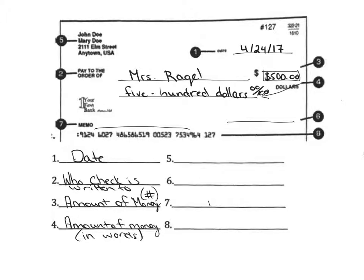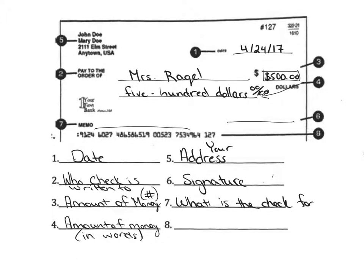Remember to put 00/100 to show there is no change. Number five is your address at the top. Number six is your signature line, where you sign that you approve this check. Number seven is what the check is for — kind of like a note to yourself. For example, to donate to Miss Riegel's classroom, so we'll just put 'donation.' And then I would sign here.